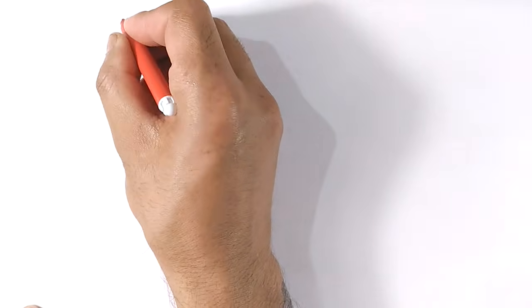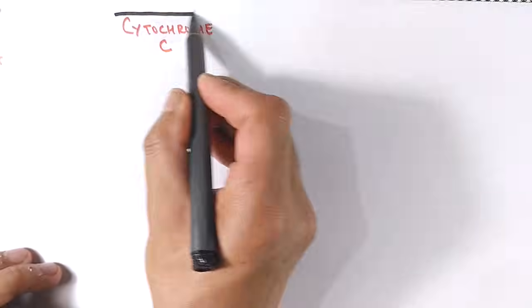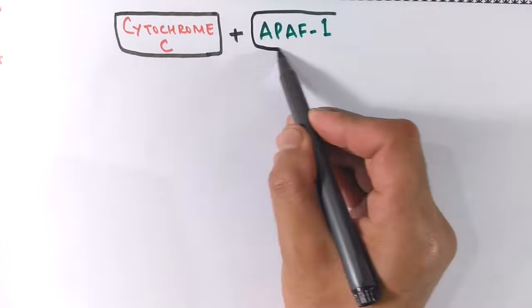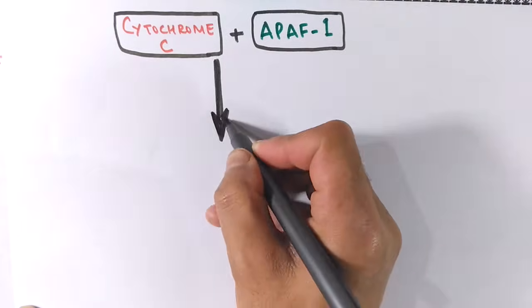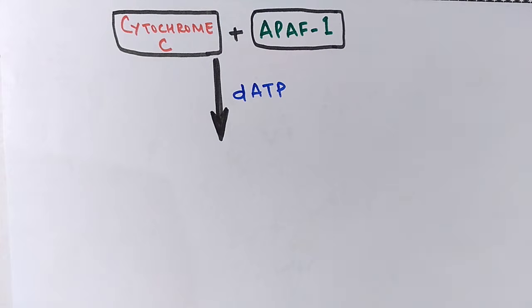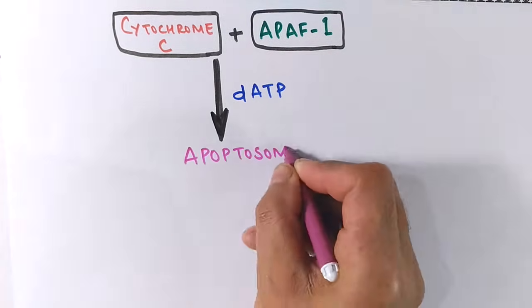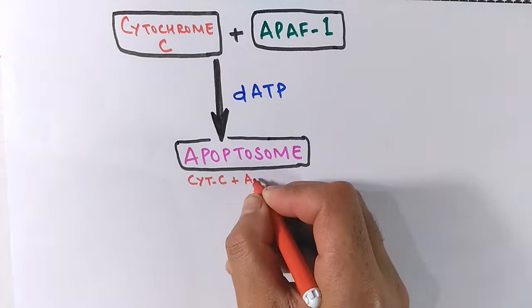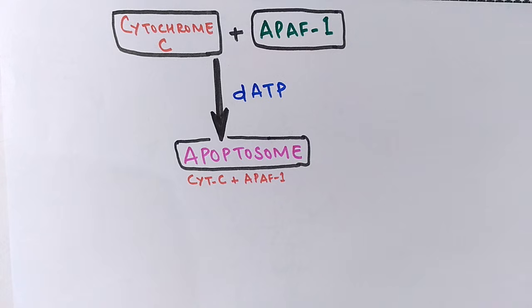After the release of cytochrome C from mitochondria, it combines with APAF1 — apoptotic protease activating factor 1 — in the presence of dATP. Through this biochemical reaction, it forms a complex called the apoptosome, which is the complex form of cytochrome C and APAF1. This reaction also releases dADP after consuming the energy from ATP.